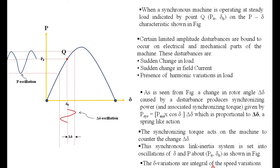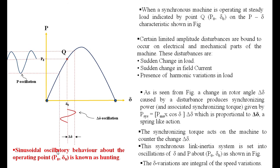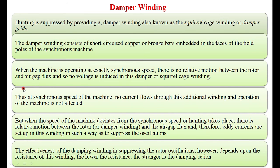The delta variations are an integral part of the speed variation. The oscillatory behavior about the operating point P₀ and delta₀ is known as hunting within the synchronous machine. These oscillations or hunting can be suppressed by damper windings placed on the faces of the rotor. The damper winding is an extra winding placed on the rotor faces, also called squirrel cage winding or damper grids. It consists of short-circuited copper bars embedded in the faces of the field poles of the synchronous machine.